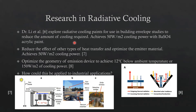Looking at other research in the radiative cooling field, Dr. Lee has used radiative cooling paints to decrease cooling load for building envelope studies. This was achieved by having a paint with very high reflectivity along with some radiative cooling characteristics. Other research in this field includes changes in geometry and changing the emission device — the actual material doing the emitting of thermal radiation. But currently, none of these research topics have been applied to industrial applications.